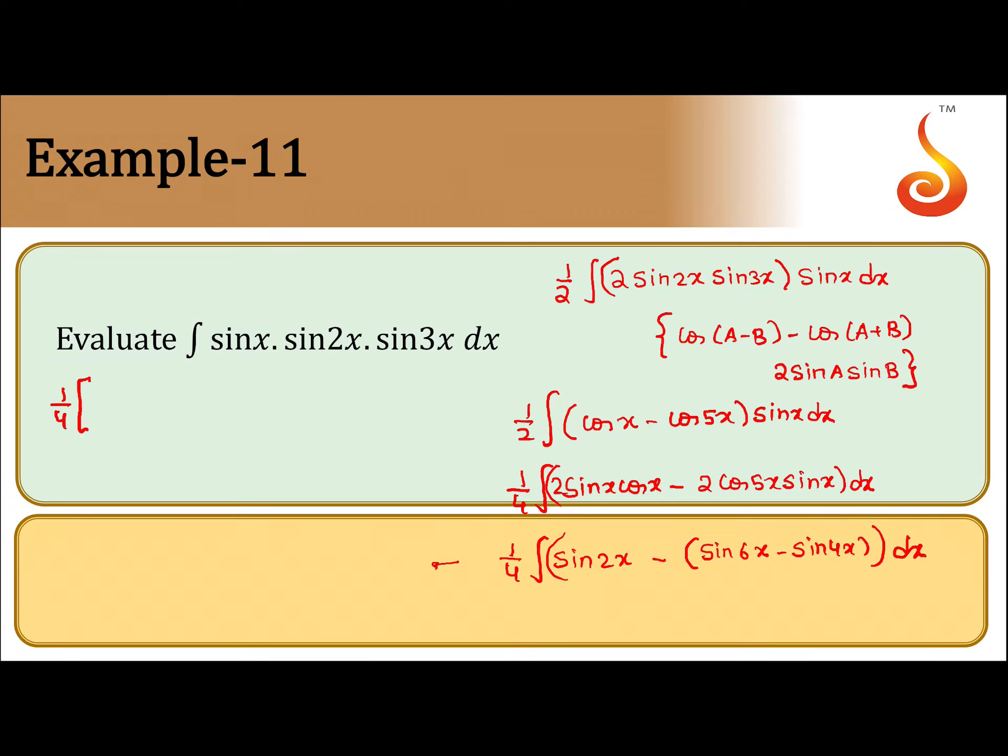Integral of sin 2x will be minus cos 2x by 2, and integral of sin 6x will be minus minus plus cos 6x by 6. Similarly, minus minus plus we get minus plus minus, minus cos 4x by 4.